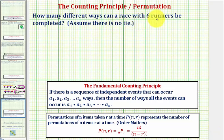How many different ways can a race with six runners be completed, assuming there is no tie? We can approach this two ways: using the counting principle or using a permutation, and we'll discuss both.